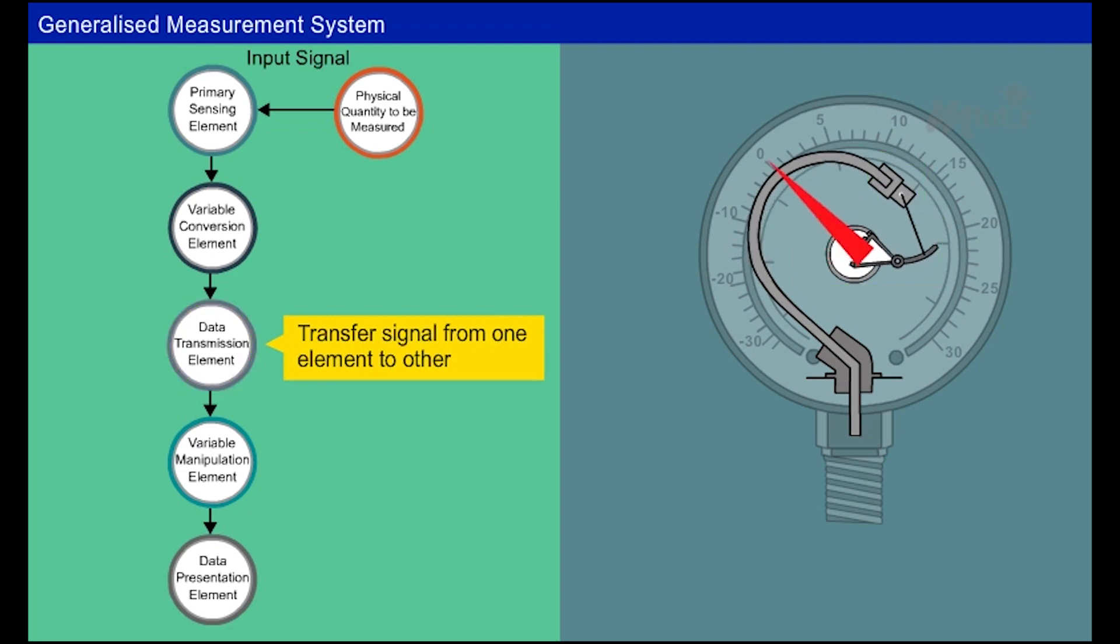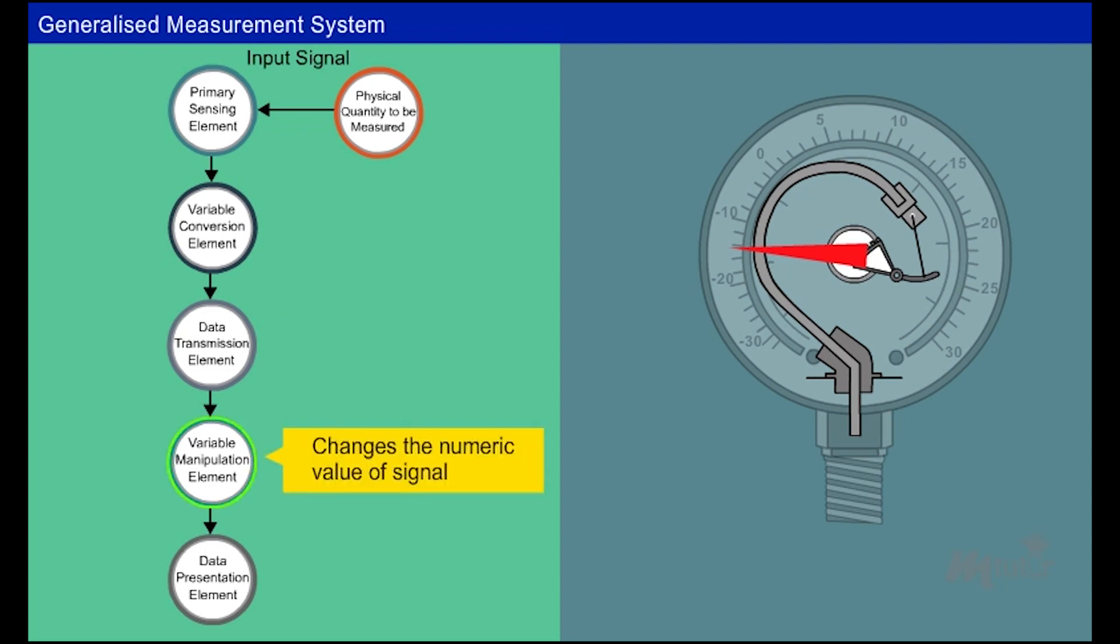The variable manipulation element manipulates the signal presented to it without changing the nature of the original signal. The gearing mechanism contributes to the manipulation unit. The gearing mechanism amplifies the small displacement so that the pointer rotates through a larger angle.